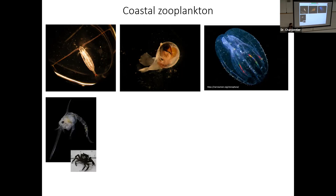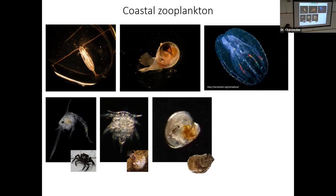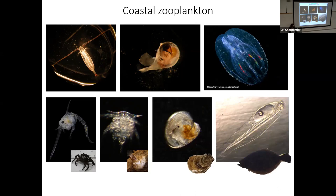For example, larval crabs are in the plankton for a few weeks to a few months before maturing into adults that live on the bottom — rocky shores in this case. This is a larval barnacle — most of us are familiar with barnacles, but maybe not what they look like early in their life cycle. Oysters are also part of the zooplankton community, and there are lots of oyster larvae in this region. And then fish — I've got a larval summer flounder here as a representative larval fish.